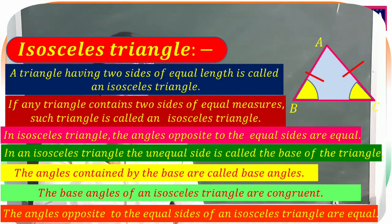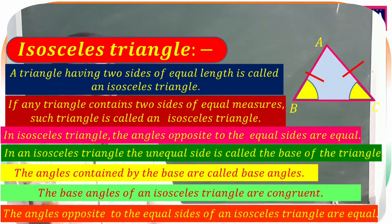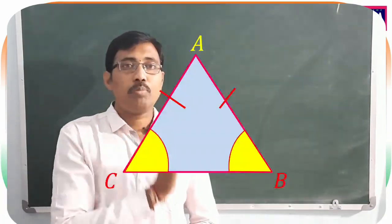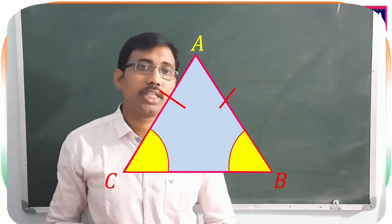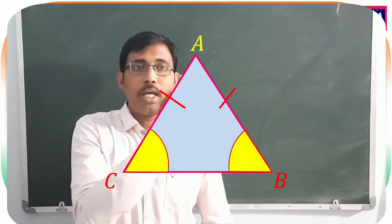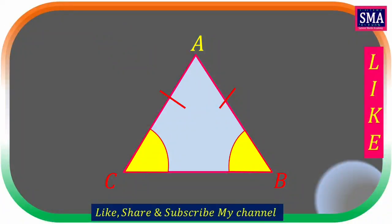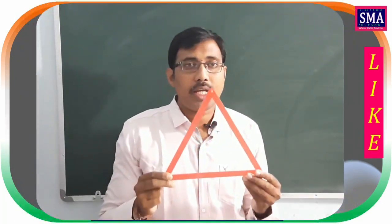In an isosceles triangle, two sides are equal and two angles are also equal. In isosceles triangle ABC, if AB = AC, then angle B = angle C.